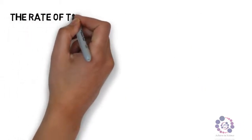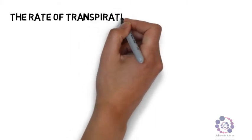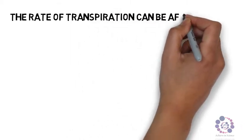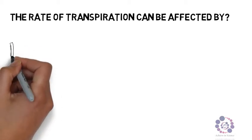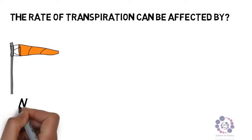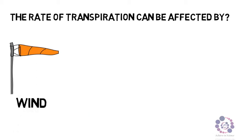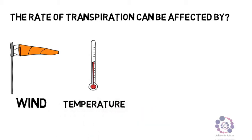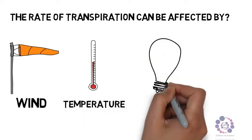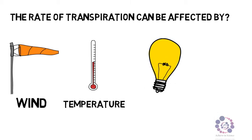Now the rate at which transpiration can occur is affected by a few factors. The first one, if it is windy, then there is going to be a greater rate of transpiration, because it is easier for the water to evaporate from the leaf. Temperature. If there is a higher temperature, water will evaporate more easily from the leaf, so there will be a higher rate of transpiration.